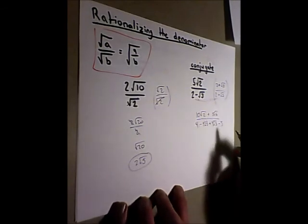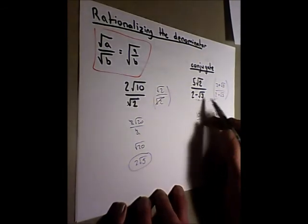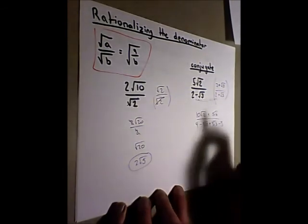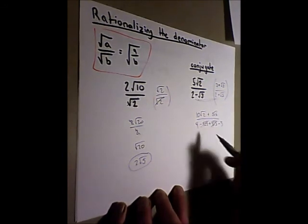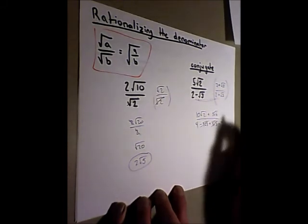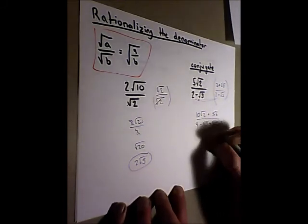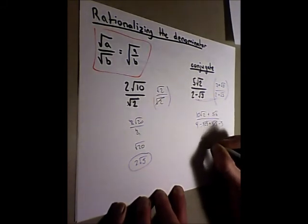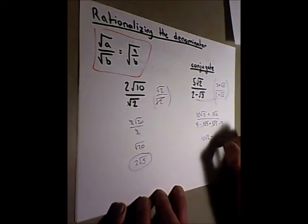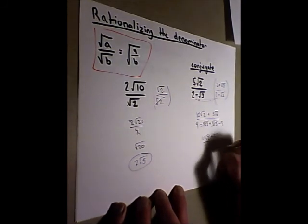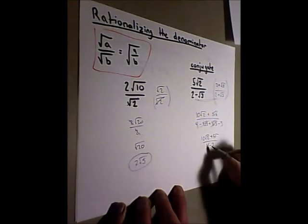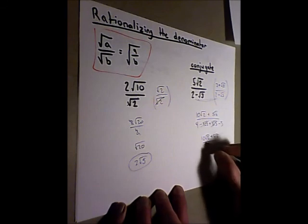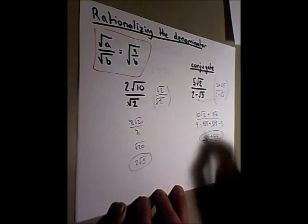And the reason we use the conjugate was because whenever we factor and we have a positive and a negative root sign, we'll have these two values just cancel. So instead of having some complicated trinomial underneath our numerator, we just have 10 root 2 plus 5 root 6 over 4 minus 3, or just 10 root 2 plus 5 root 6 over 1. And that's our answer. Thank you.